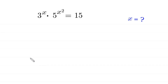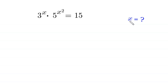Hello everyone, you are welcome. Today we solve this very nice exponential equation: 3 to the power x times 5 to the power x squared is equal to 15. We need to find all possible values of x.